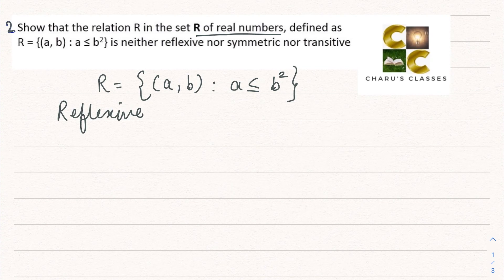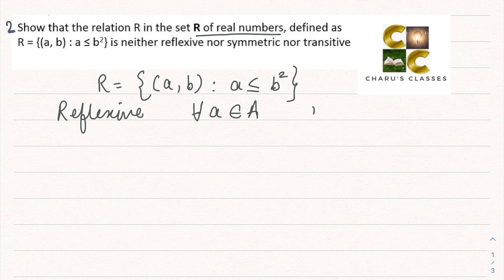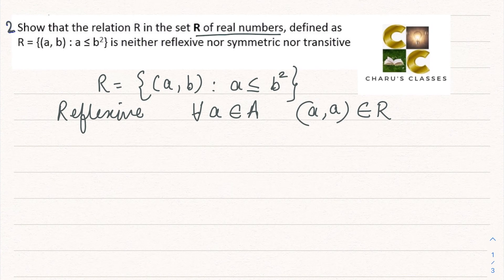The reflexive condition is: for every 'a' belonging to the set A, if (a, a) belongs to the relation then it is reflexive. Now we have to prove it is not reflexive, so we check if a ≤ a² holds for all real numbers.